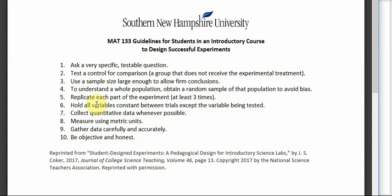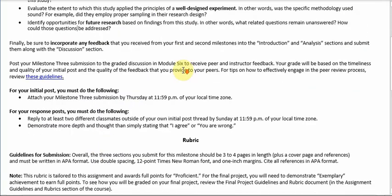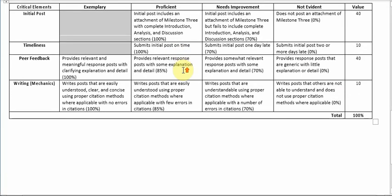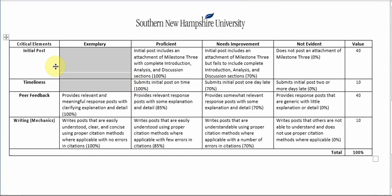I'm not looking for you to address all ten of them and say which ones they did and which ones they didn't. But a few of these should be prominent — either because they really did them well, or because they didn't do them at all, or did a poor job on them. The rubric for the third milestone is a lot more streamlined than the other rubrics. It basically just asks you to include a complete assignment with a complete introduction part, a complete analysis part, and a complete discussion part.